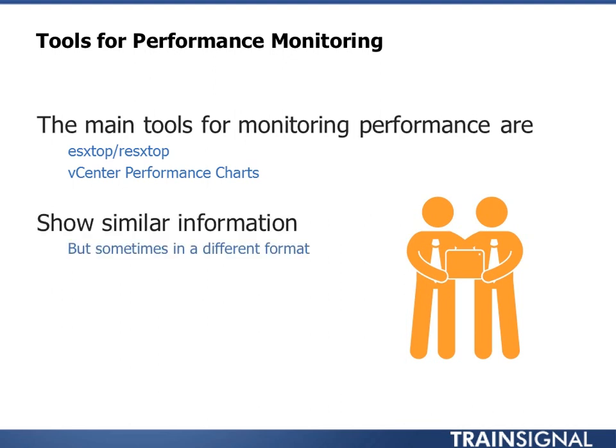These tools sometimes show similar information, sometimes in a different format. Whereas ESX-Top may show a percentage, vCenter will often show a total count. For example, on errors, ESX-Top will say here's an error percentage for network transmits, whereas vCenter will say here's a running count of errors in frames. It's something to keep in mind — you can't always do a direct comparison of the numbers.